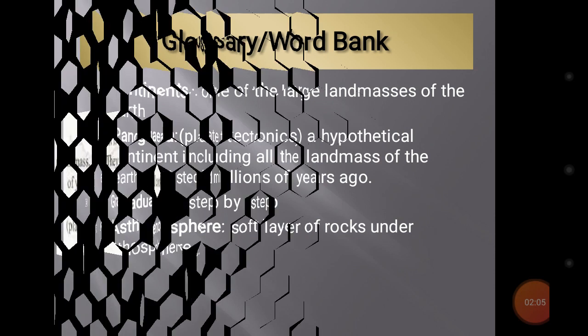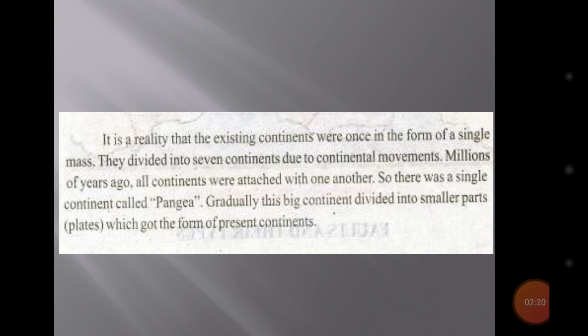Now we will discuss what is Pangaea. It is a reality that the existing continents were once in the form of a single mass. They divided into seven continents due to continental movements. Continental movements are the movements that occurred during the past, due to which Pangaea divided into continents. Millions of years ago all the continents were attached with one another, so there was a single continent called Pangaea.